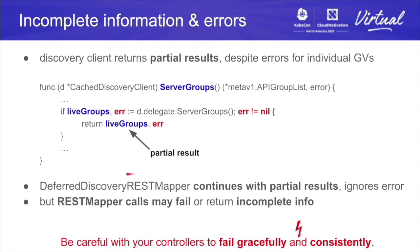The discovery client is kind of graceful — it returns errors directly but also gives you the partial information it was able to gather from the cluster. Always expect a non-nil first result even though the error is also non-nil, and cope with that. The discovery REST mapper is very graceful — it just continues with partial results and ignores errors, but incomplete information might have consequences. Think about your controller and where you use REST mapper. Try to fail gracefully, because you have to expect errors to happen, and stay consistent in a way that matches your use case. We saw a namespace controller which blocks rather than doing stupid things — sometimes staying consistent like that is more important than continuing gracefully. With that, I pass it over to David.